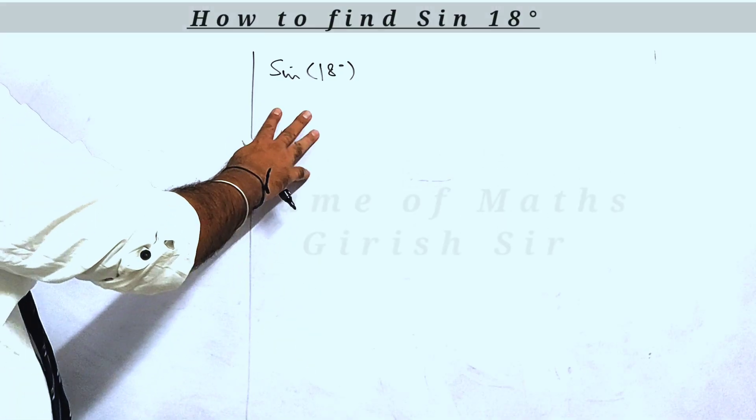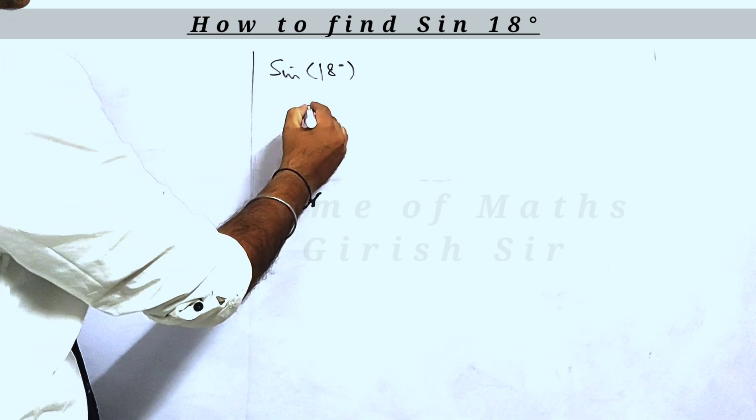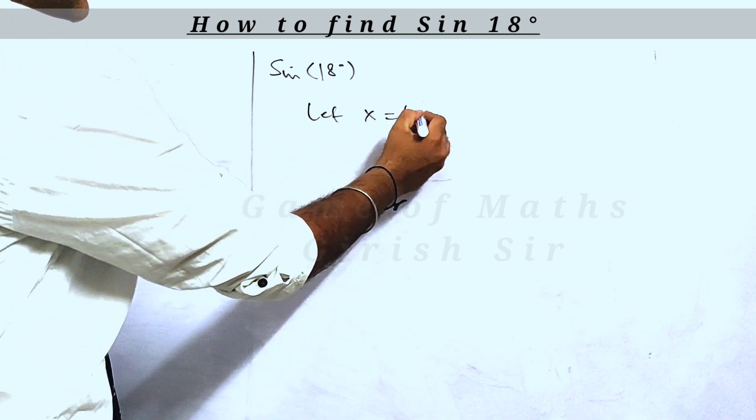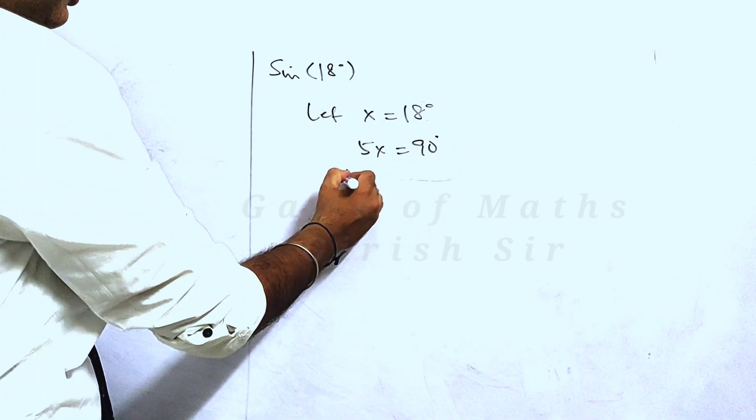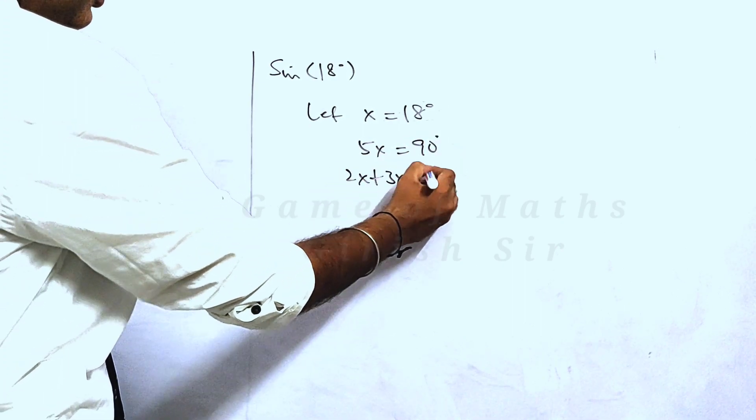Hello students, let's see how to find sin 18 degrees. We can take x equal to 18 degrees, multiply with 5 on both sides, and write like this.